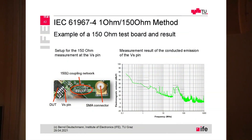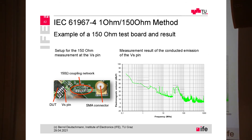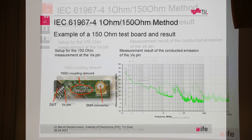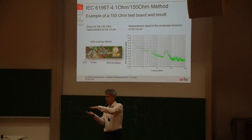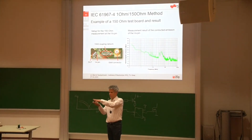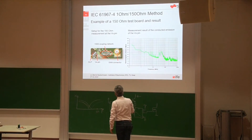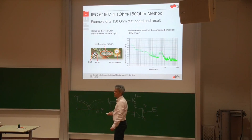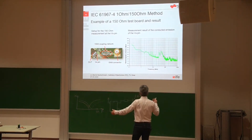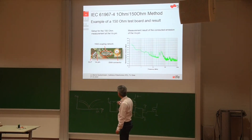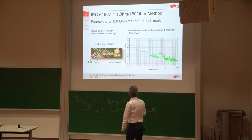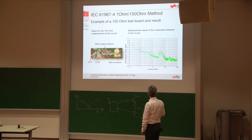Here is a real example of a 150-ohm coupling network used on a test IC. You can see the 120-ohm resistor, the capacitor, and the 51-ohm resistor placed close to the power supply pin. A 50-ohm microstrip line — a trace on the top layer of the PCB with a signal return layer below — connects to the SMA connector where the EMI receiver is attached. The measurement result shows conducted electromagnetic emission from 150 kHz up to 1 gigahertz, with significant emission levels visible across the entire frequency range.